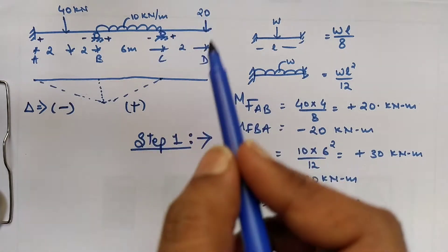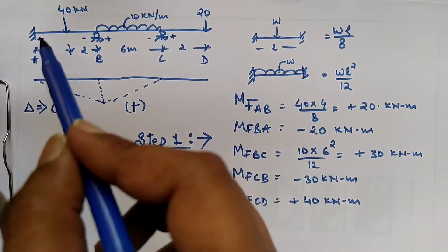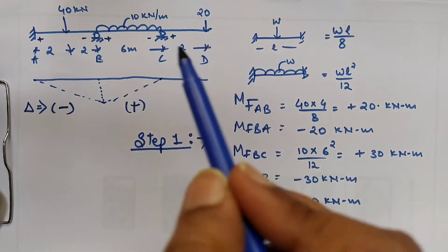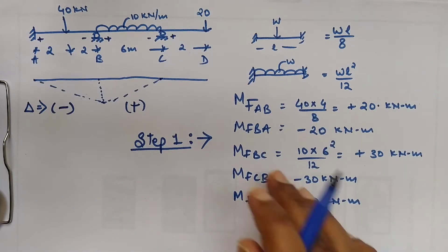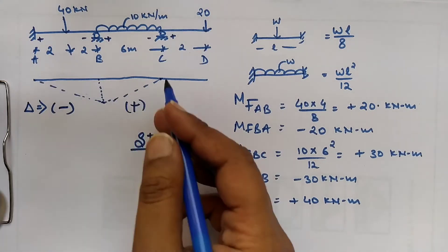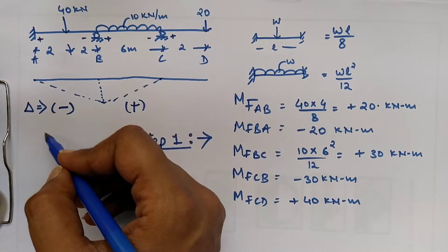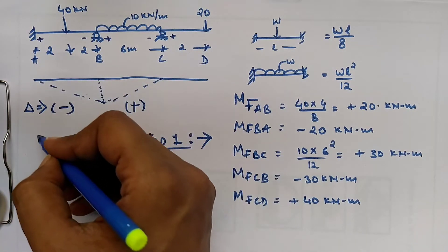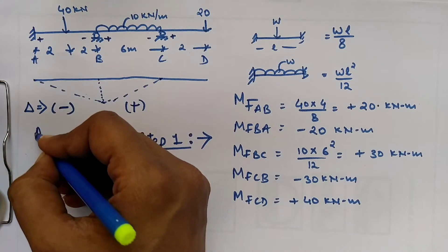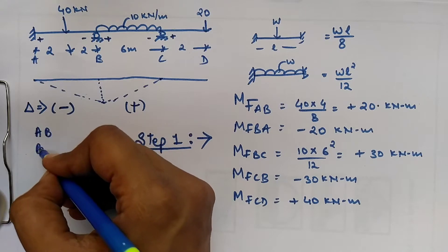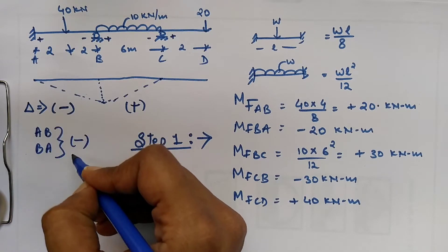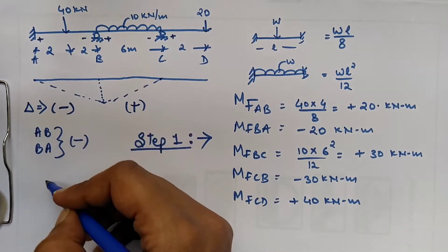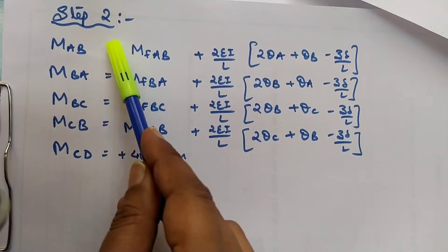All the values are written with positive and negative, considering the left side as positive. For span AB, we consider the deflection as negative because whenever the right-hand side support is sinking, we consider it as negative — otherwise positive.